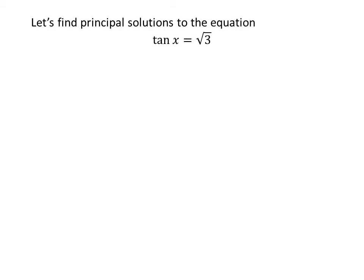Let's first find the principal solutions to the equation tangent of x is equal to square root of 3. We know the solutions to the trigonometric equation for which x is greater than or equal to 0 and less than 2 times pi are the principal solutions.